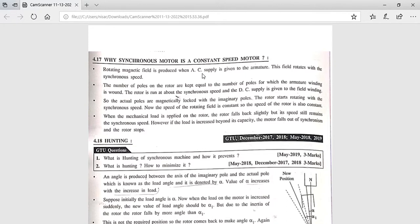So this field rotates with synchronous speed. The number of poles on rotor is equal to the number of poles on the armature winding. So number of poles on rotor...